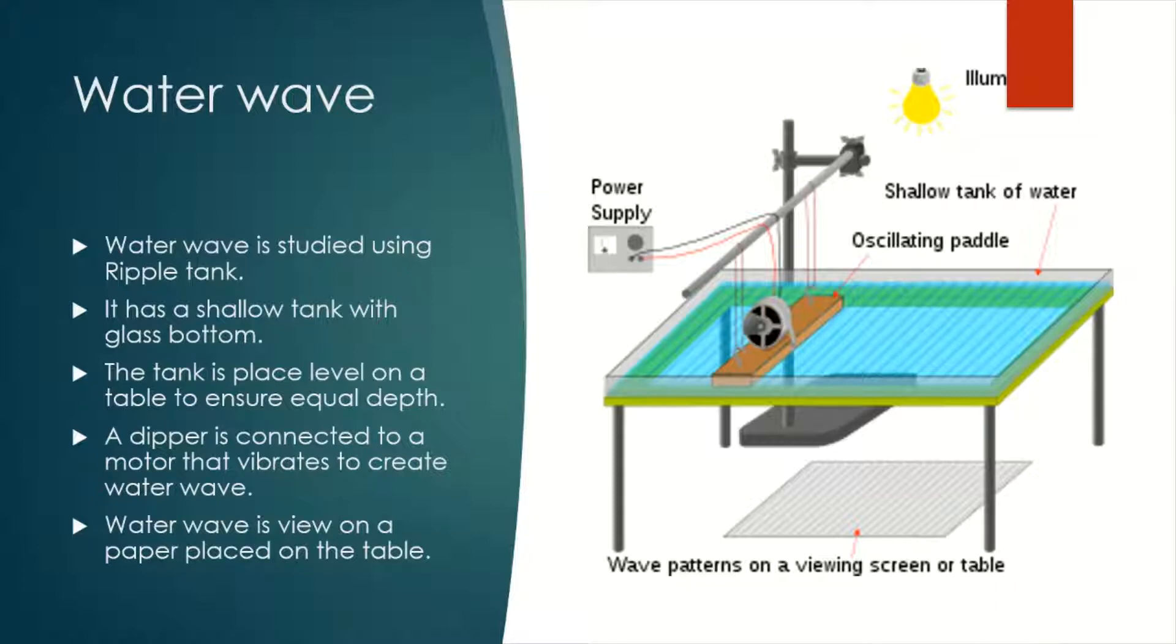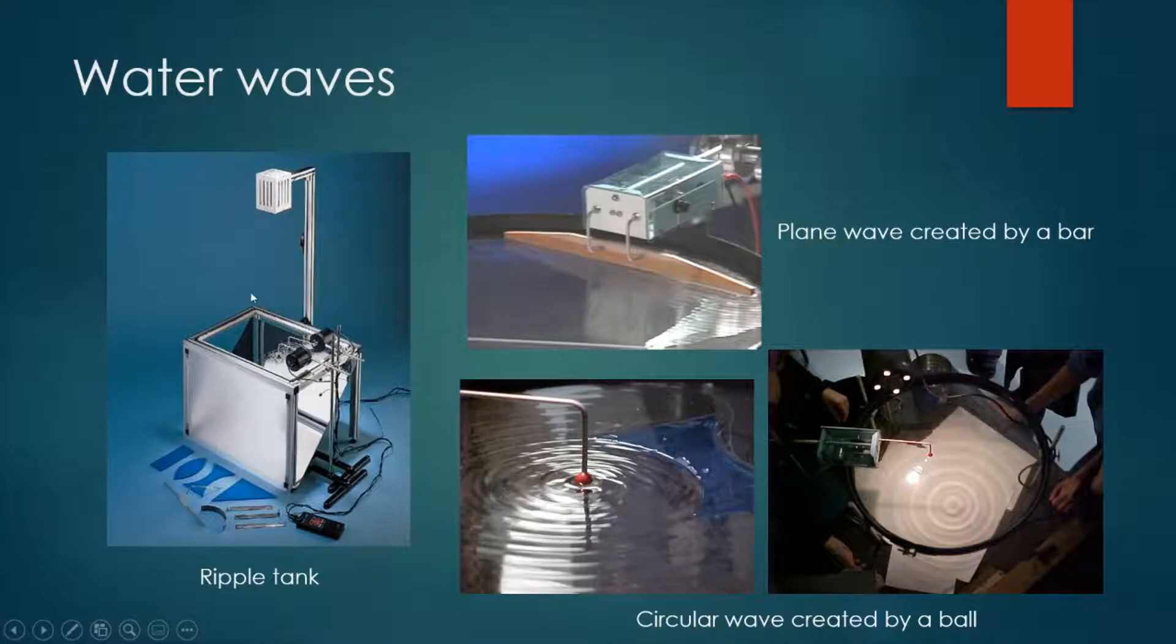It looks like bright and dark fringes. This is a picture that shows Ripple Tank.